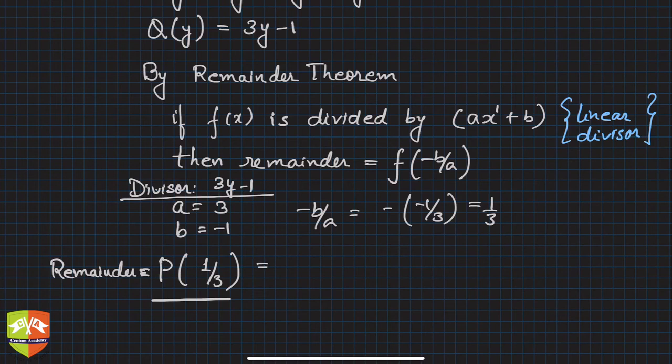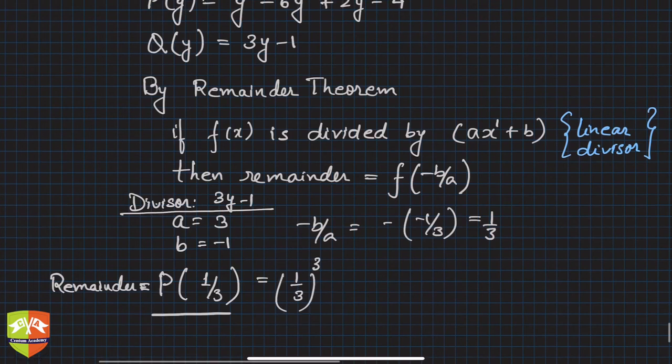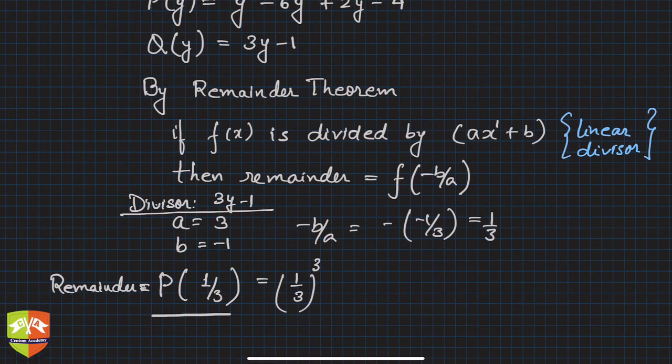What is P(1/3)? Let's evaluate. You substitute 1/3 in place of y: (1/3)³ - 6(1/3)² + 2(1/3) - 4. This is the calculation that gives us the remainder.